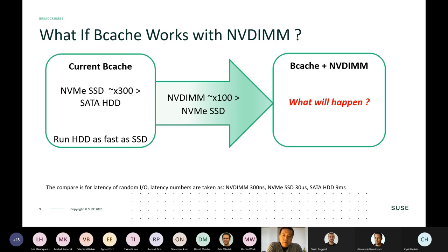In general, NVMe SSD is around 300 times faster than SATA hard drive, and NVDIMM is 100 times faster than NVMe SSD. Given that NVDIMM capacity per DIMM is 256 or 512 gigabytes — large compared to DRAM but still small compared to current SSDs — it is quite natural to think about storing Bcache metadata on NVDIMM, especially since metadata performance is critical for small random I/O.